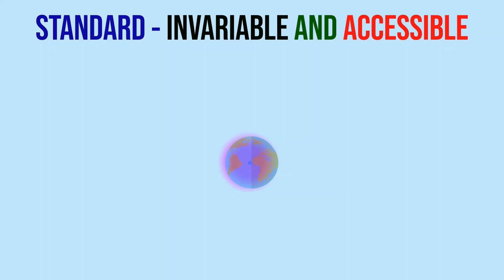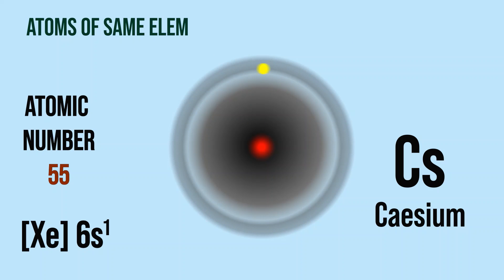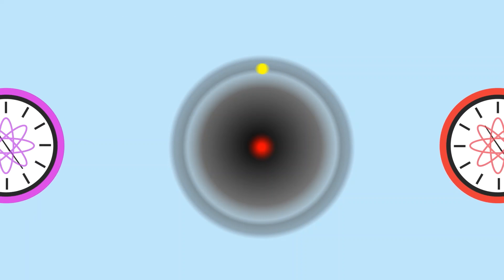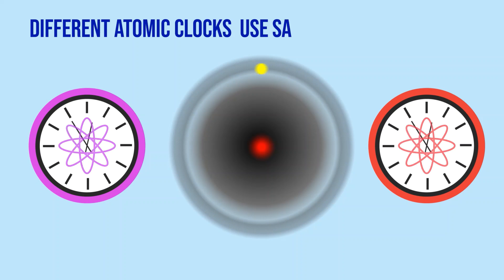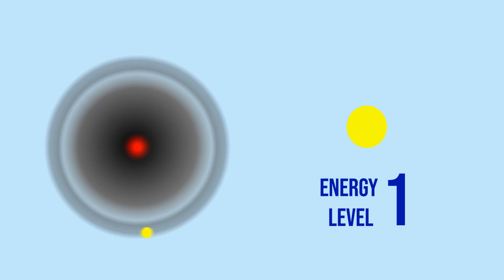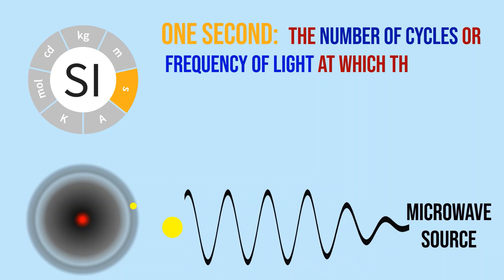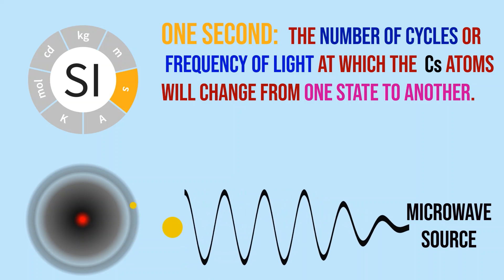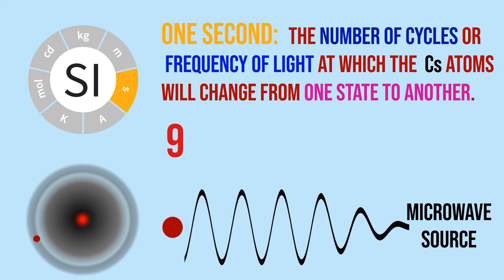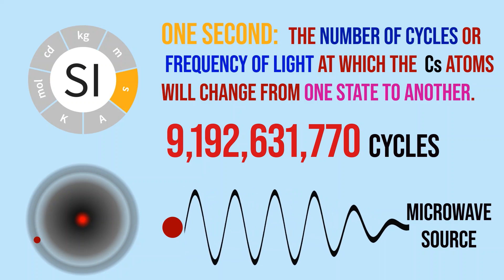The answer lies in the heart of the matter: atoms. All atoms of a particular element have precisely the same electronic configuration, and these atoms resonate at an extremely consistent frequency. This means different atomic clocks using the same element have exactly the same pendulum. More precisely, scientists rely on the constant energy difference between different levels that electrons can occupy. Formally, one second is defined as the number of cycles, or frequency, of light at which cesium atoms change from one state to another — that frequency being 9,192,631,770.